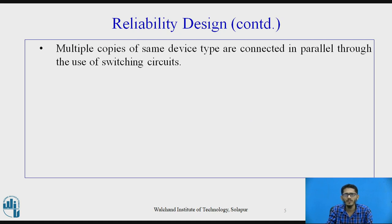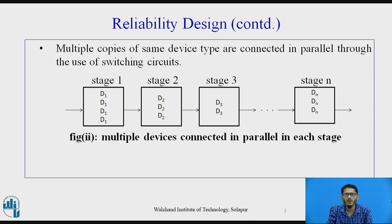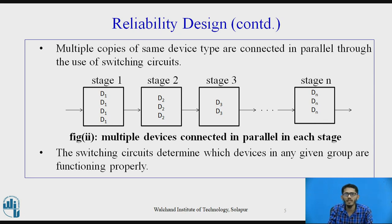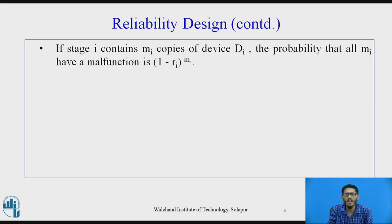Multiple copies of the same device type are connected in parallel through the use of switching circuits. As we can see, in every stage multiple copies of the devices are present. These switching circuits determine which devices in any given group are functioning properly. Suppose stage i contains mi number of copies of device di; the probability that all mi copies have a malfunction is equal to (1 − ri) raised to mi, where ri is the reliability of device di. This is the malfunction probability.